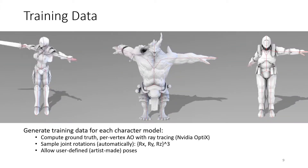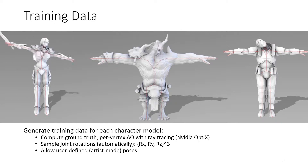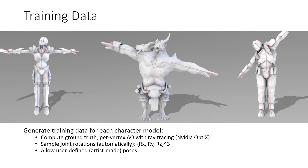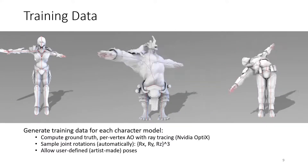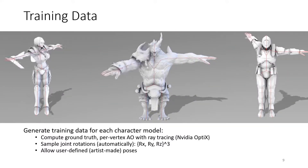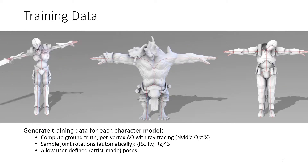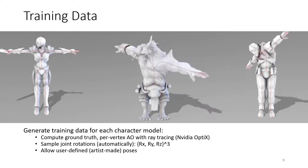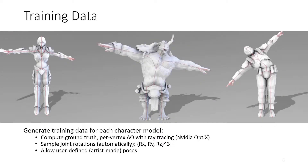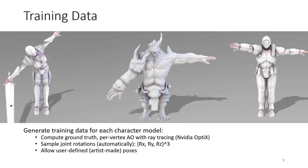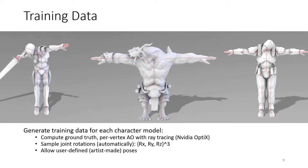For training, we automatically generate training data by individually rotating each joint to a set number of positions. The ground truth can be generated with whichever method you prefer; however, we use NVIDIA Optix to provide high-quality ray-traced ambient occlusion for training. The way we generate these poses is purely for ease of automation, but any set of poses can be used for training, such as artist-generated poses.